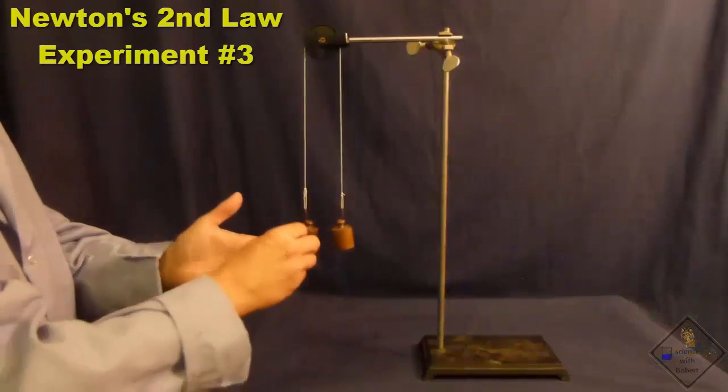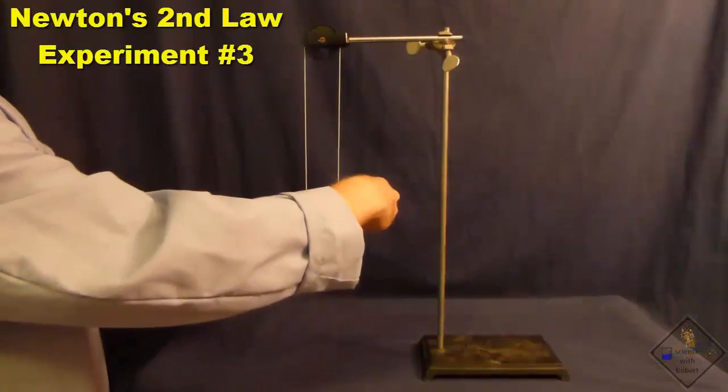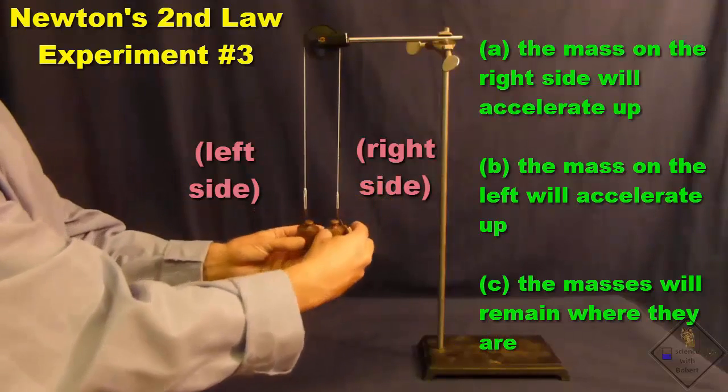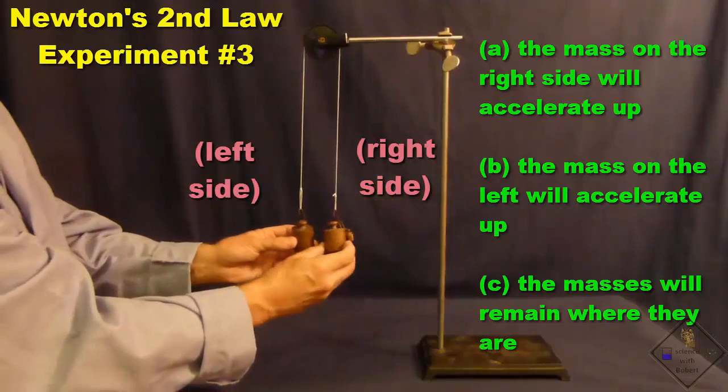Dr. Smith is now adding a second smaller mass to the right side. Now, when Dr. Smith lets go of the masses, what do you predict will happen?